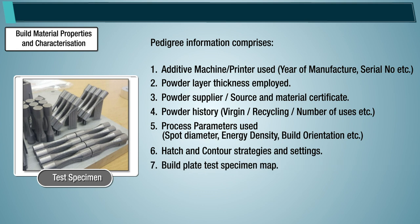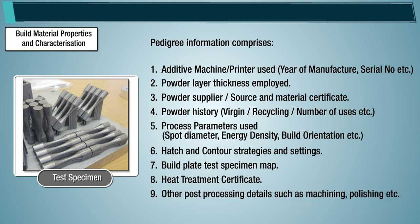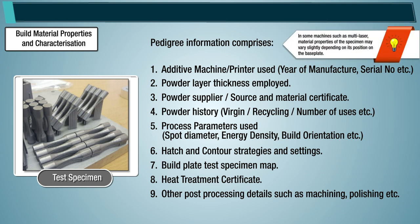Pedigree information also includes the build plate test specimen map, heat treatment certificate, and other post-processing details such as machining and polishing. Note: In some machines such as multi-laser systems, material properties of the specimen may vary slightly depending on its position on the base plate. This variation is attributed to multiple lasers acting in tandem and also the variation of argon gas flow distribution across the base plate surface and associated process emissions.